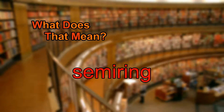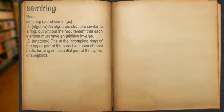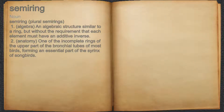What does semi-ring mean? Semi-ring. Noun. 1. An algebraic structure similar to a ring, but without the requirement that each element must have an additive inverse.